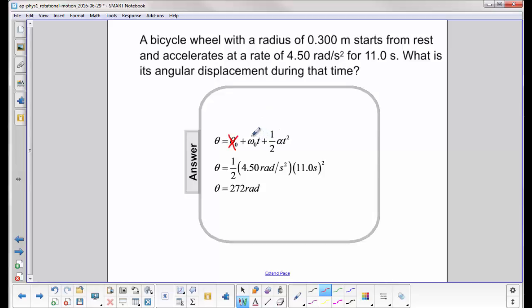You start from rest, so that means your initial velocity was zero, your initial angular velocity. So the only term we're left with is one half alpha t squared.